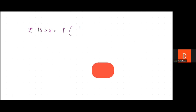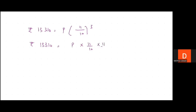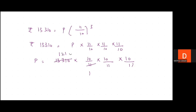Rupees 13,310 equals P × (11/10) raised to the power 3. So P equals 13,310 × (10/11) × (10/11) × (10/11). Canceling out: the principal comes out to be rupees 10,000.